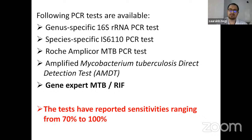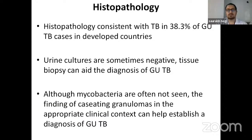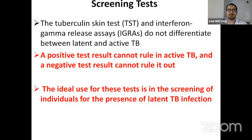In histopathology, findings consistent with TB are found in 38.3% of cases in developed countries. Urine culture is sometimes negative, and tissue biopsy can aid the diagnosis. Although mycobacteria are often not seen, caseating granulomas in appropriate clinical context can help establish the diagnosis of genitourinary TB. Two types of screening tests are available: the tuberculin skin test and the interferon gamma release assay (IGRA). Both do not differentiate between latent and active TB; their ideal use is screening individuals for latent TB infection.